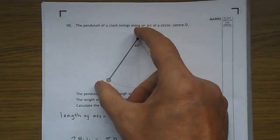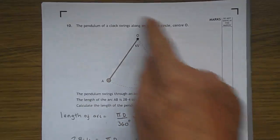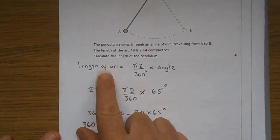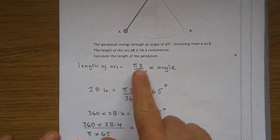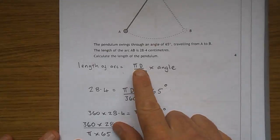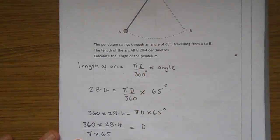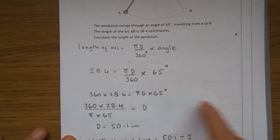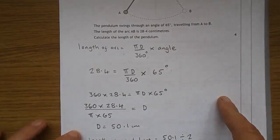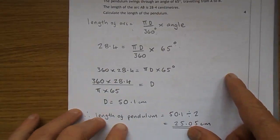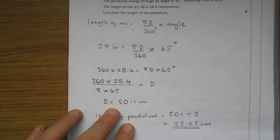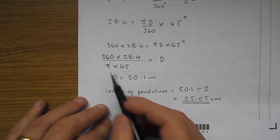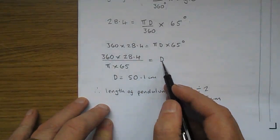Now in here, the length of the pendulum is actually the radius of a circle. So here we have me working it out. The length of the arc is pi times d, now that's the circumference of the circle, over 360 times the angle. They give you the length of the arc, 28.4 equals pi d over 360 times 65, just plugging in a few wee numbers here. And as usual, I've kind of laboured this to death. I've done 28.4 times 360 and I've left the pi d over 65.